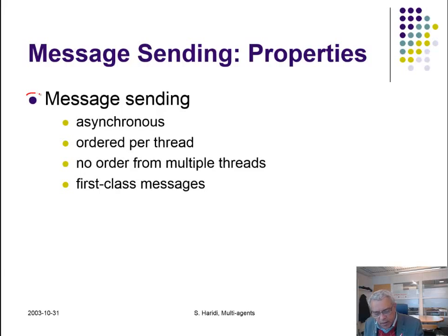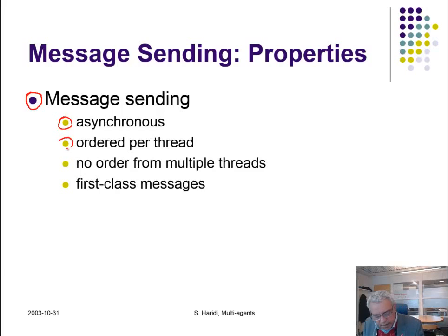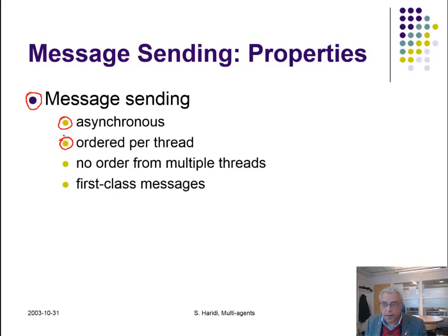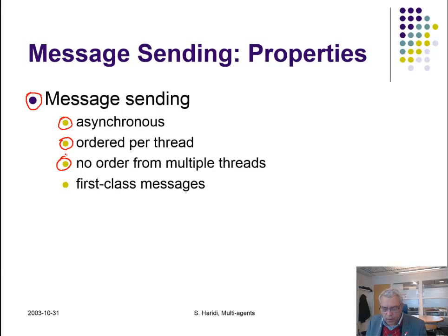Message sending in Oz is asynchronous, meaning that the sender, once it sends the message on a port, can continue with the next statement. It is ordered per thread — if I send message A and then message B by an agent, then the receiver will receive these messages in that order, A and B, appearing in the stream A followed by B. Of course there is no order from multiple threads because they have their own execution schedules.